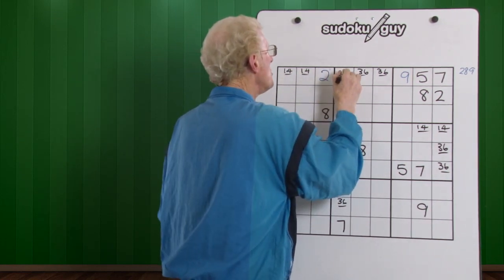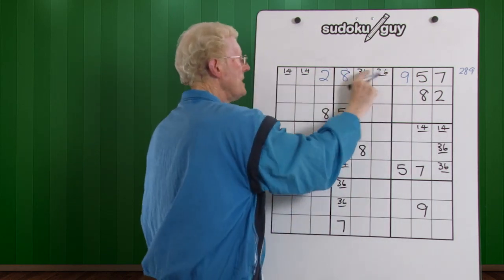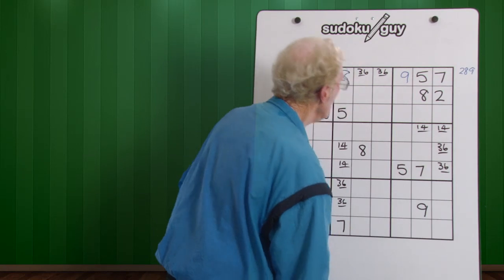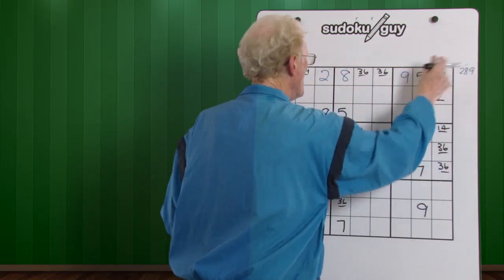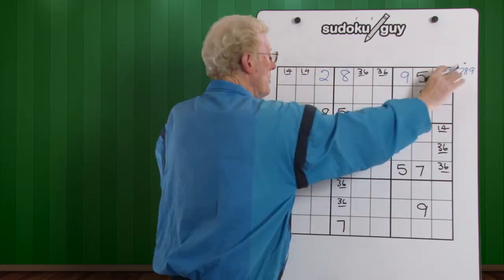And so we were able to get three numbers solved, even though we had all these little numbers, using the counting up to nine and remembering which numbers are possible there. Okay, so that's a row, an example.